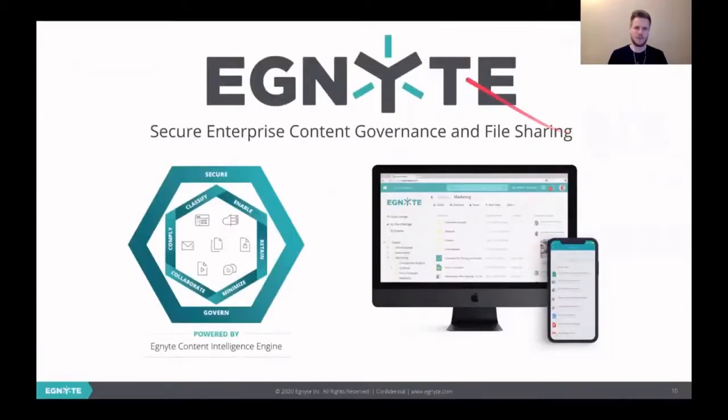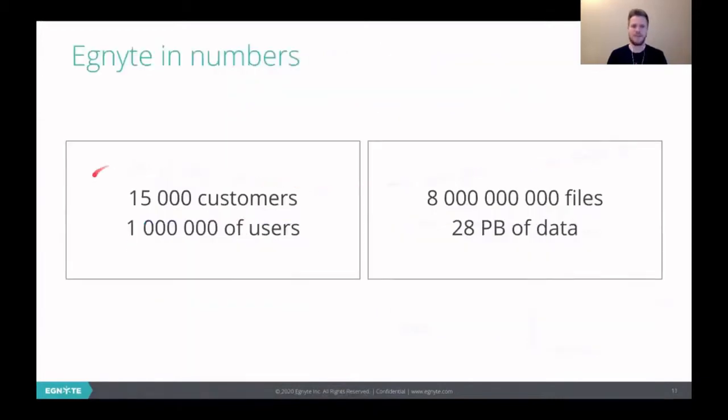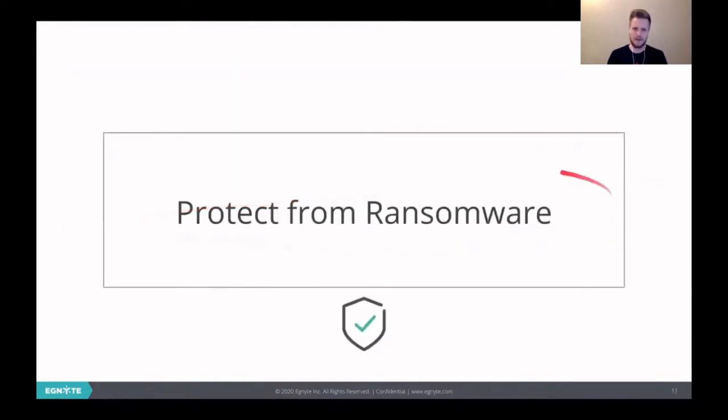And now I will tell you a few words about Ignite. So Ignite is a company which has its own product which is secure enterprise content governance and file sharing platform. Basically we have a solution for our customers which allows them to share files, collaborate on files, store files in a secure and convenient way. We have a web application, desktop application and mobile application for that. And we have a lot of customers which are mostly companies. Some of them are big companies like Yamaha. We have a lot of users, they have a lot of files and a lot of data. So this is the target that can be attacked by the ransomware. And our job is to protect our customers from the ransomware.